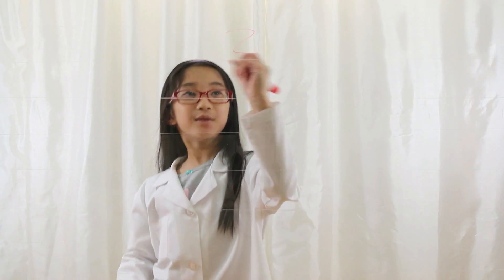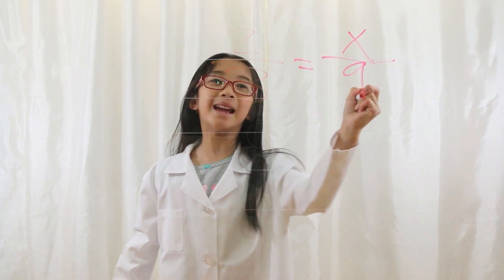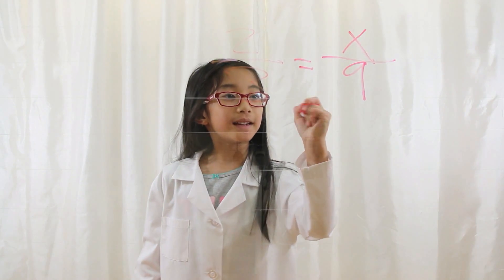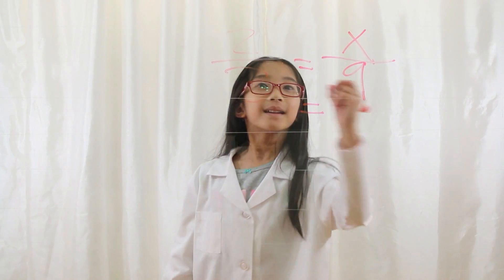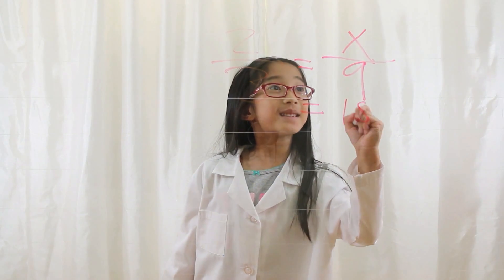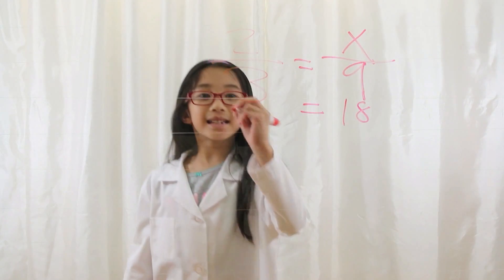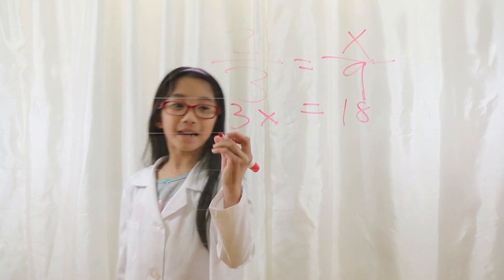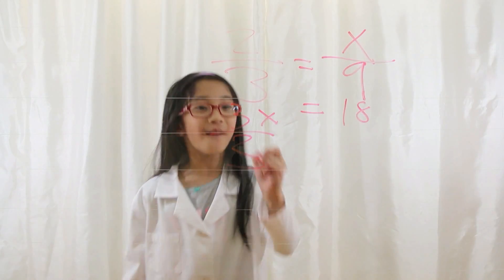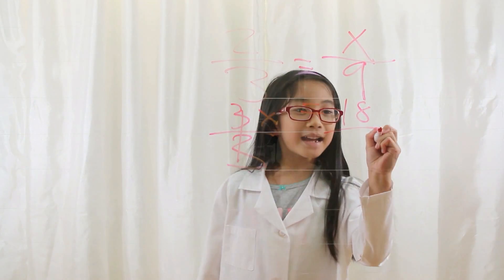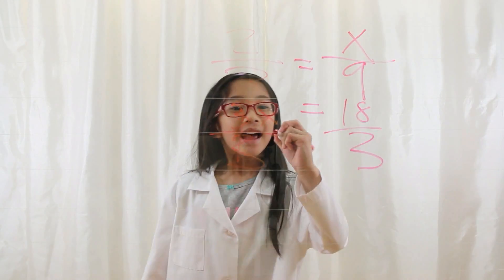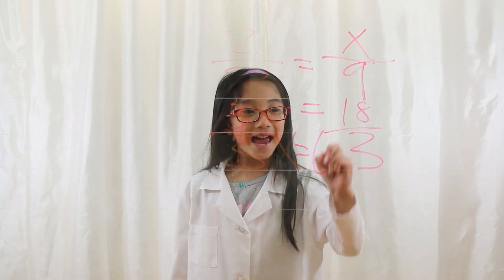Let's say you have 2 over 3 equals x over 9. First you bring the equal sign down, then you cross multiply. 2 times 9 equals 18, and 3 times x equals 3x. You divide by 3 on both sides to solve for x. 3 divided by 3 is 1, and 18 divided by 3 is 6. So x equals 6.